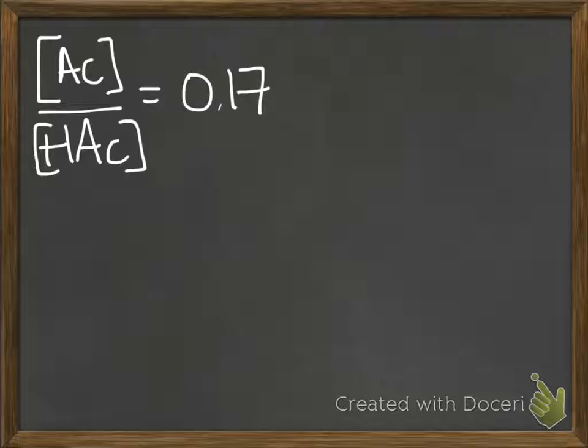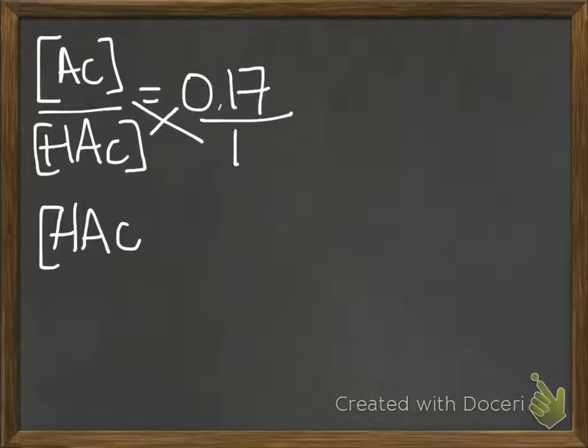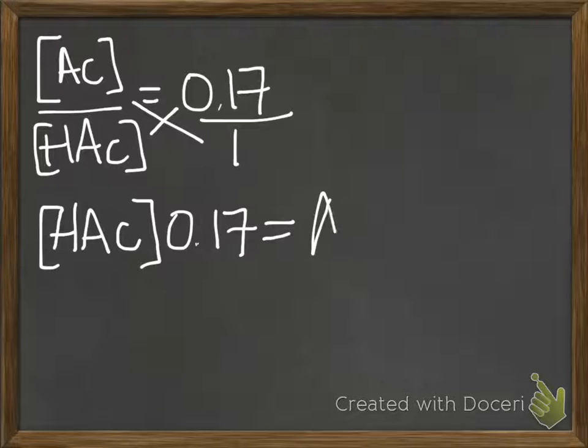So the way I would take the next step is I would cross-multiply here and here. And you know there's a 1 under here because we're dealing with fractions. So you end up with a new equation.